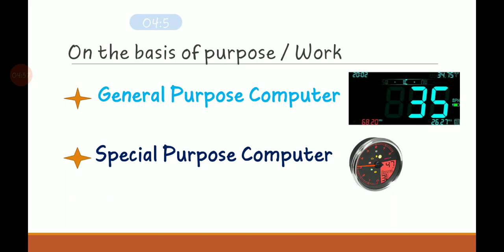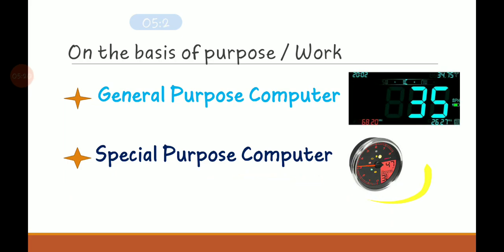On the basis of purpose and work, there are two types of computers: general purpose computers and special purpose computers. General purpose computers use the digital signal and are also called digital computers, whereas special purpose computers use the analog signal and are called special purpose computers.